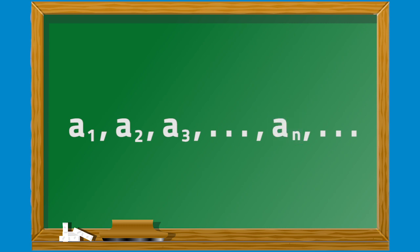The first term of the sequence is a sub 1, the second term is a sub 2, the third term is a sub 3, and so forth. The nth term or general term of a sequence is denoted by a sub n. If a sequence does not have the last term, the sequence is called infinite.